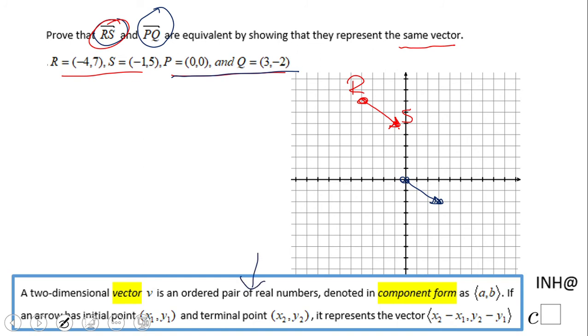If you notice, we have what we call the component form of a vector. Let's see how we get that for PQ. Since I have the blue marker...